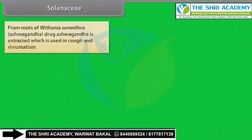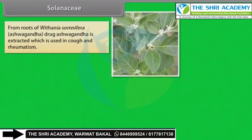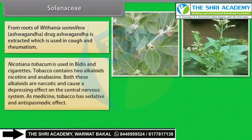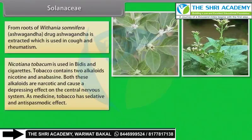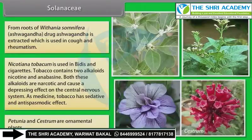From roots of Withania somnifera (ashwagandha), the drug ashwagandha is extracted, which is used in cough and rheumatism. Nicotiana tabacum is used in beedies and cigarettes; tobacco contains two alkaloids — nicotine and anabasine — both narcotic and causing a depressing effect on the central nervous system. As medicine, tobacco has sedative and antispasmodic effect. Petunia species are ornamental plants.